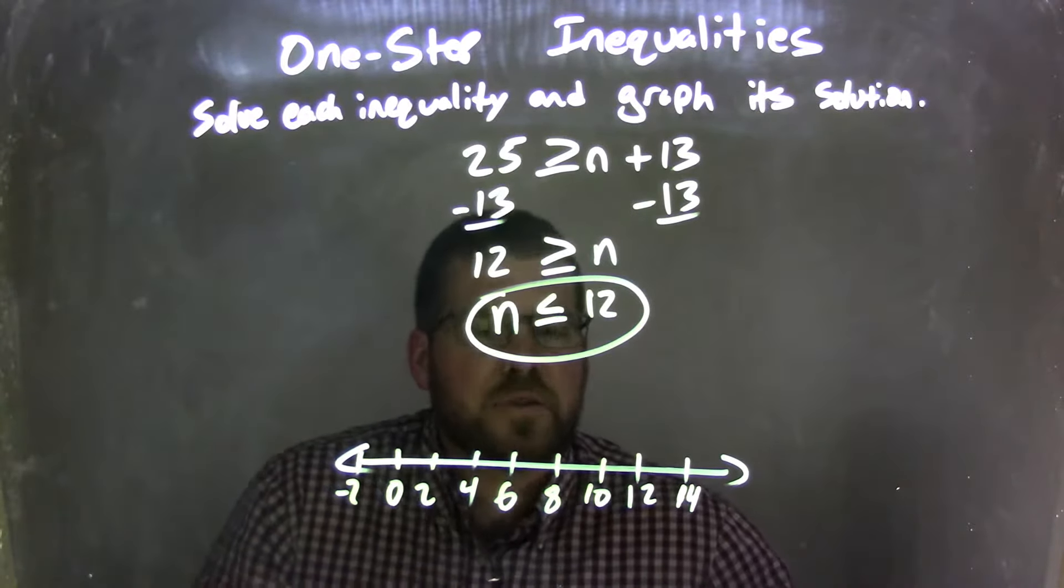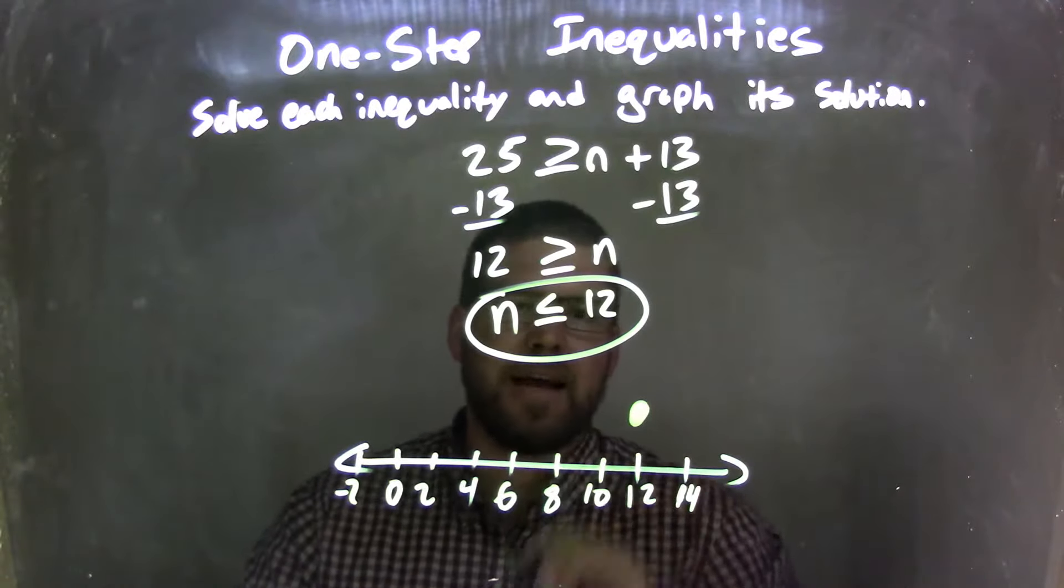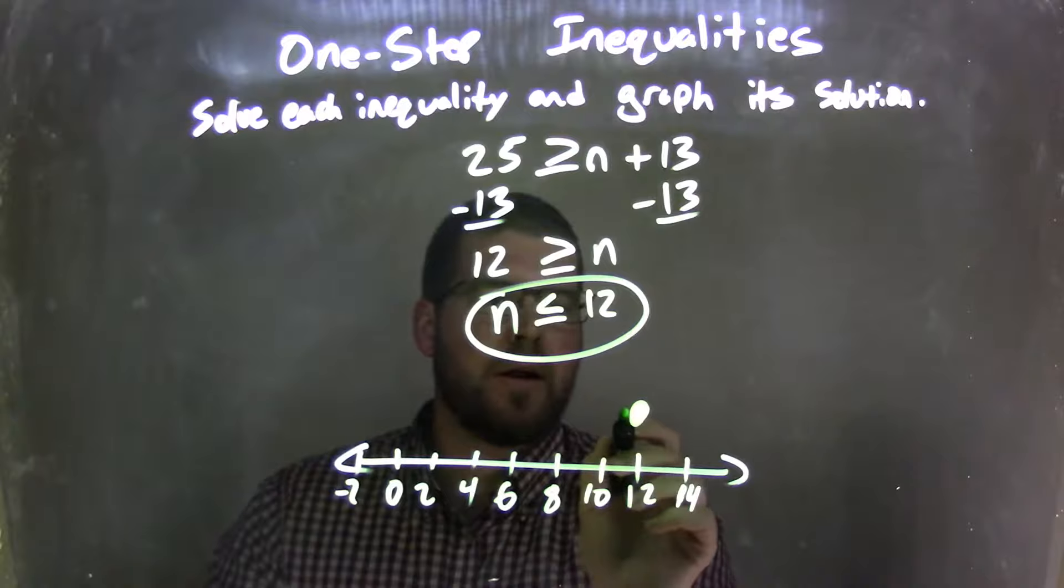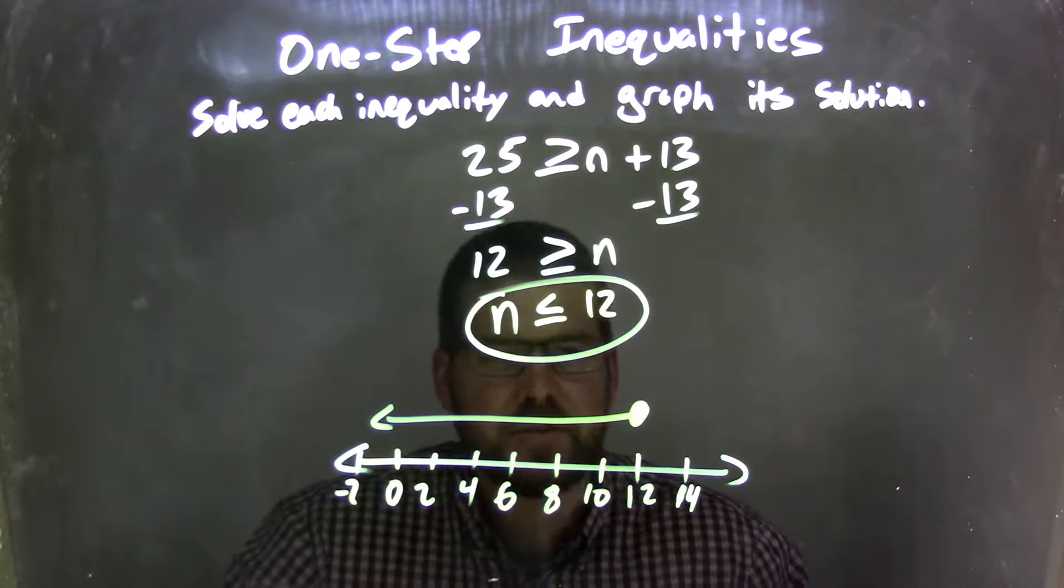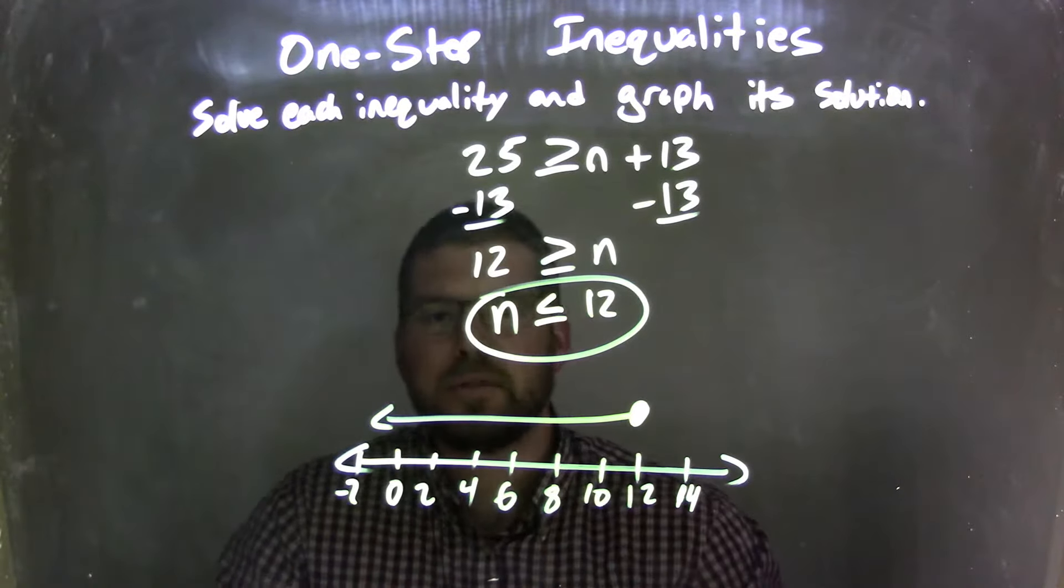Well, since n can equal 12, we're going to have a closed circle right here over 12. It can equal 12. Then n is also less than that 12, so I want to put a line that goes to the left. All the values are less than 12. So now I have a graph. That graph matches my inequality, which is n is less than or equal to 12.